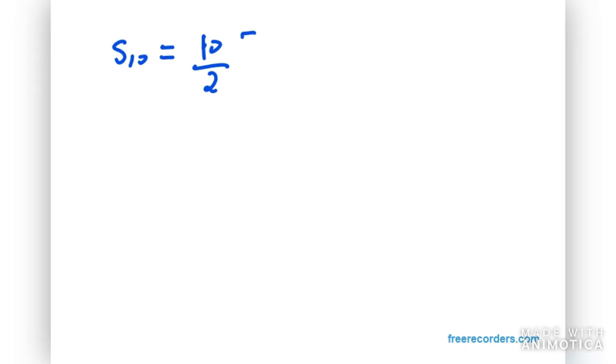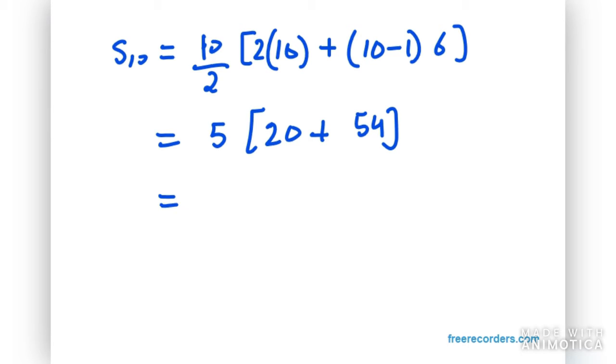Ten over two, twice of a in this case is 10, 10 - 1 into 6. So 10 over 2 is 5. Twice of 10 is 20 plus 9 × 6 is 54. That means the total will be 5 × 74, which is equal to 370. That means total distance covered by a competitor is equal to 370 meters.